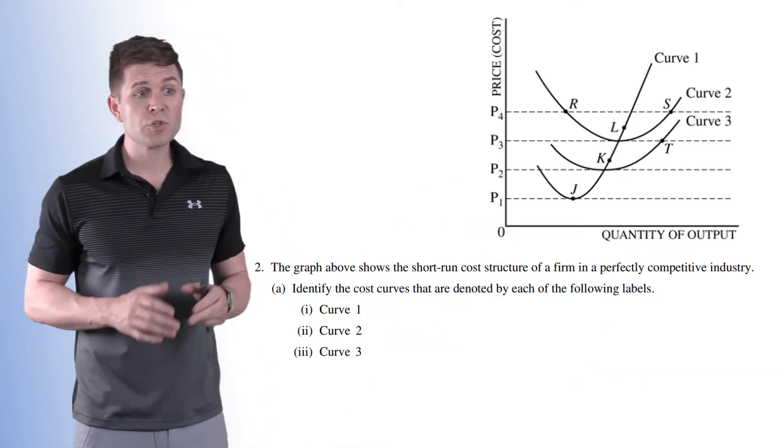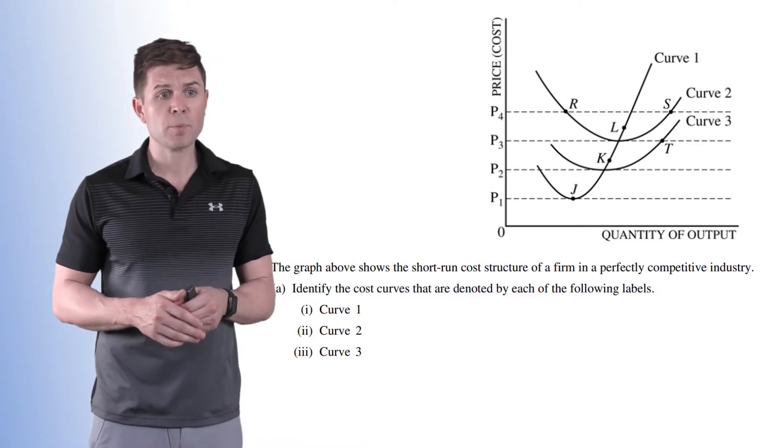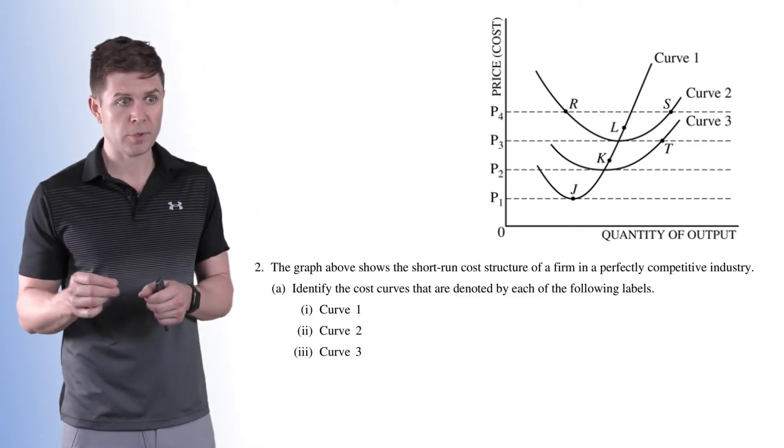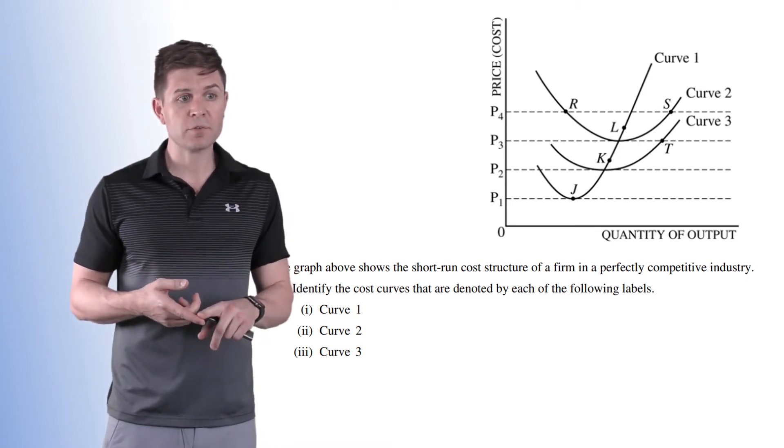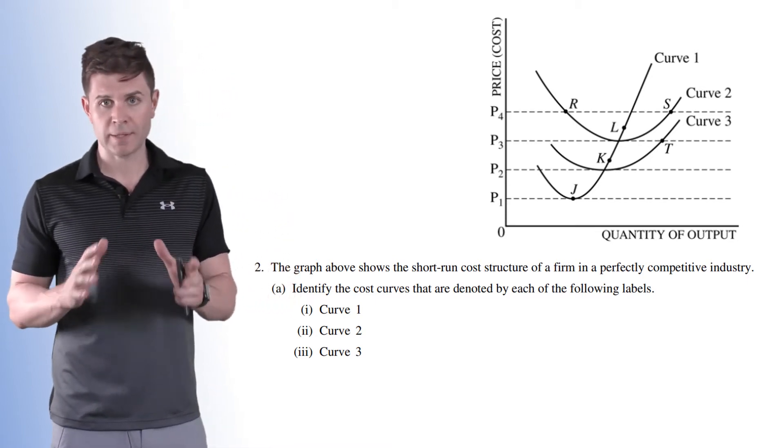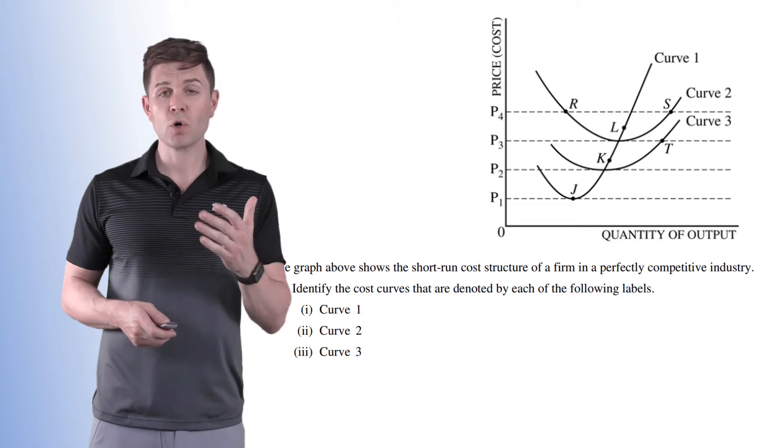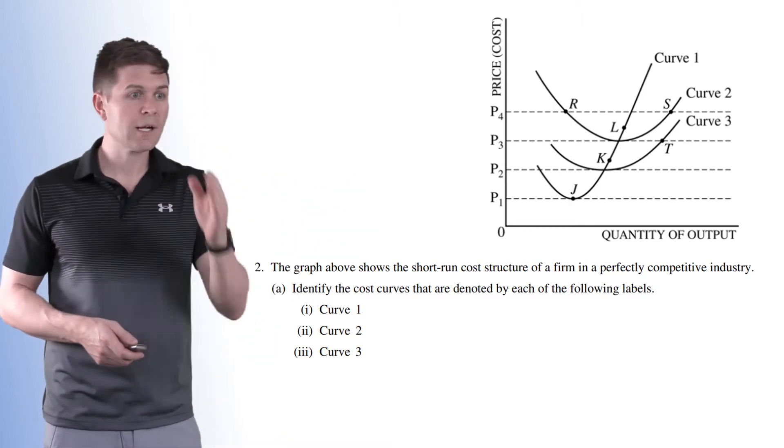The graph above shows the short run cost structure of a firm in a perfectly competitive industry. Part A says identify the cost curves that are denoted by each of the following labels. So curve one dips down and comes back up.